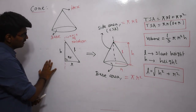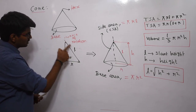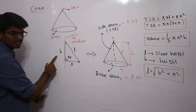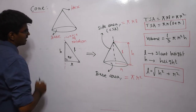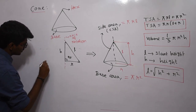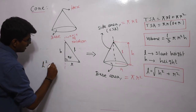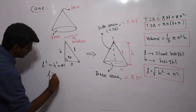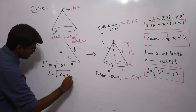The right angle triangle's dimensions are taken as: the hypotenuse is taken as L, the height is taken as H, and the base radius is taken as R. From this, we can write using Pythagoras theorem: L² = H² + R², so L = √(H² + R²).